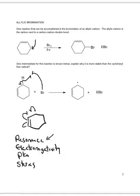Moving the radical from the allylic carbon, carbon 1, basically to carbon 3 in the cyclohexene. When we draw resonance structures, we always have to put the resonance arrow in between and show all our electrons moving. Our resonance structure is this, and the more resonance structures we can draw for something, the more stable it is.